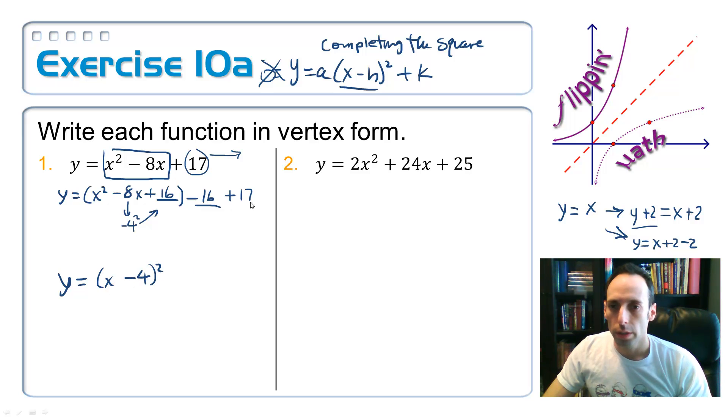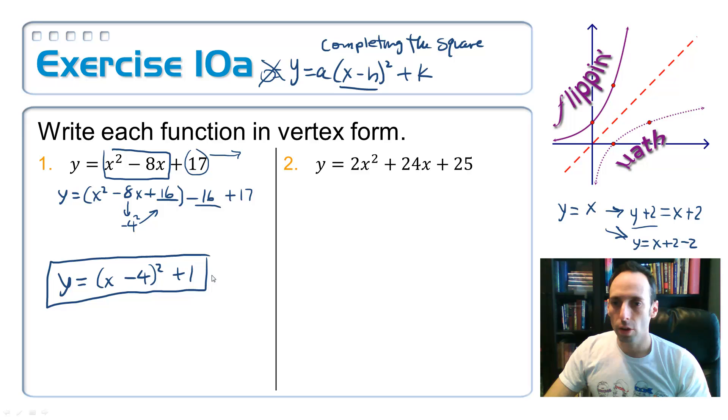So finally, our equation looks like this: y equals x minus 4 squared, and then add those two things up, plus 1. If you were to expand all this out, of course it would match up with this y equals x squared minus 8x plus 17 in standard form.